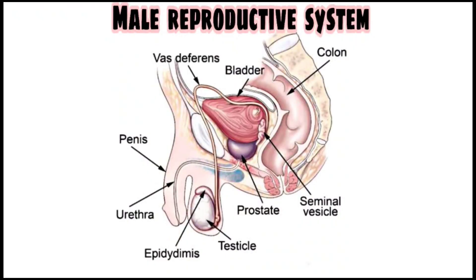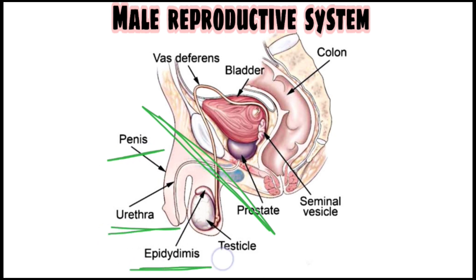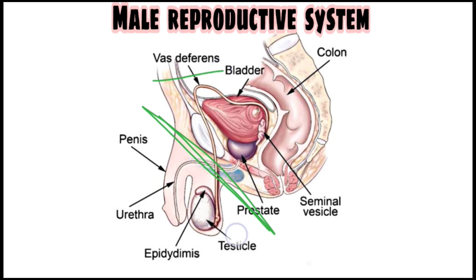Today's topic is the male reproductive system. The organs are divided into two groups: external organs and internal organs. External organs include the penis, urethra, epididymis, and testis or testicles. Internal organs include the vas deferens, prostate, and seminal vesicle.